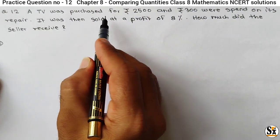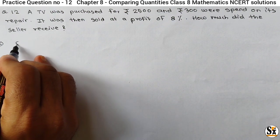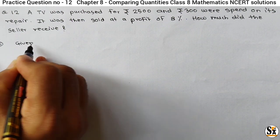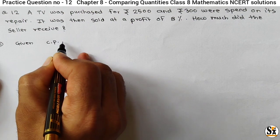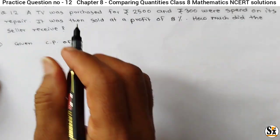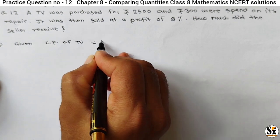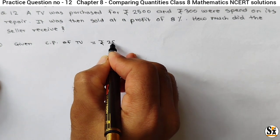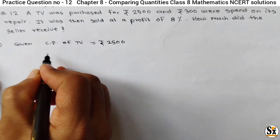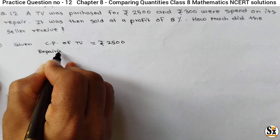Here what is given? Cost price of this TV is given. So given is CP of TV. Obviously it is old TV and some repair is required. So cost price of this TV is equal to Rs 2500. And repairing amount is also given, that repairing amount is Rs 300.